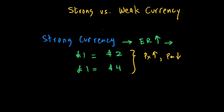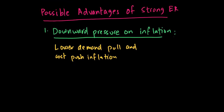Now I want to talk about the possible advantages of a strong currency, or what we call exchange rate going up or a high exchange rate. The first advantage of the exchange rate becoming stronger is basically the downward pressure on inflation. When there is a strong exchange rate, there will be lower demand-pull and cost-push inflation — when the exchange rate goes up, your inflation goes down.